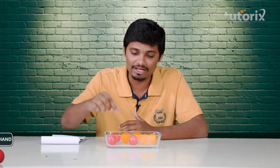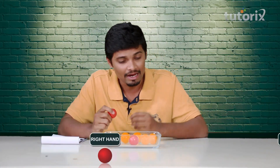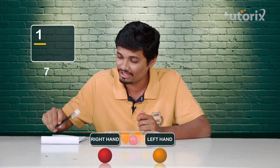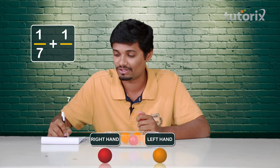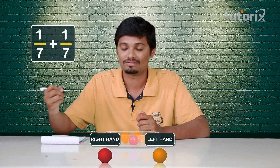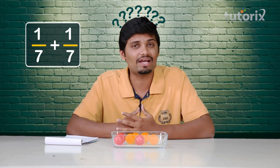I have 7 balls here, and if I take one ball using my right hand and one ball using my left hand, in both cases the fraction is 1 by 7. Now, if I want the total fraction of balls that I have taken out, then I should add the fractions: 1 by 7 and 1 by 7. But I don't know how to add the fractions.